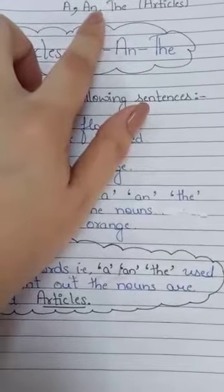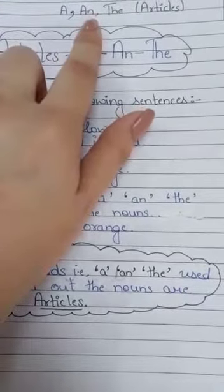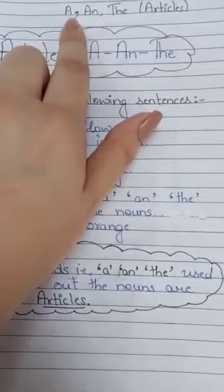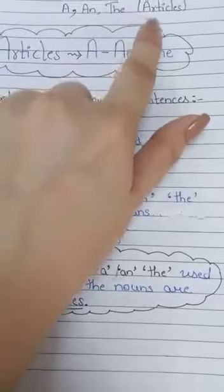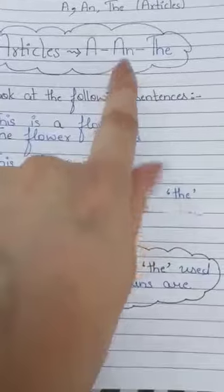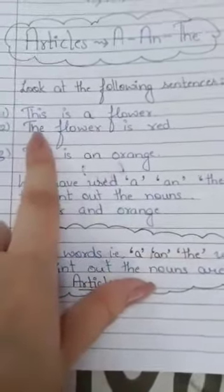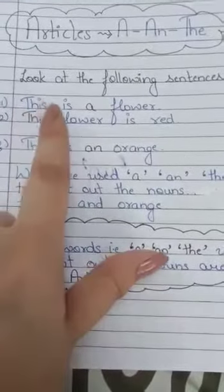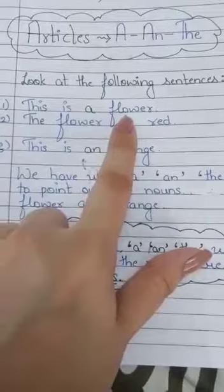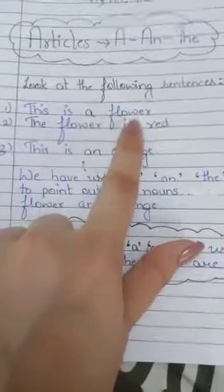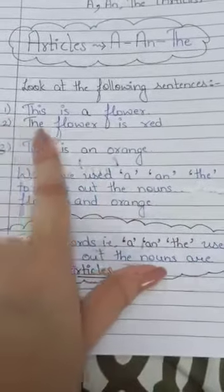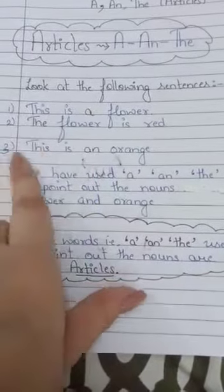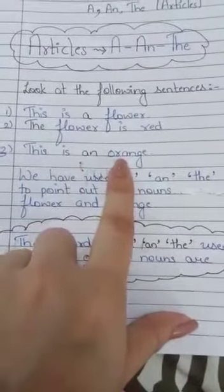These are the articles: 'a' and 'the'. Now look at the following sentences. First sentence: 'This is a flower.' Second sentence: 'The flower is red.' Third sentence: 'This is an orange.' We have used 'a' and 'the' to point out the nouns 'flower' and 'orange'.